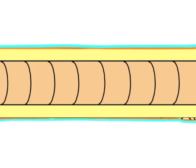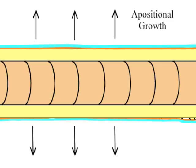In this tissue, more osteoblasts can be produced, allowing for the bone to grow in width. This is known as appositional growth.